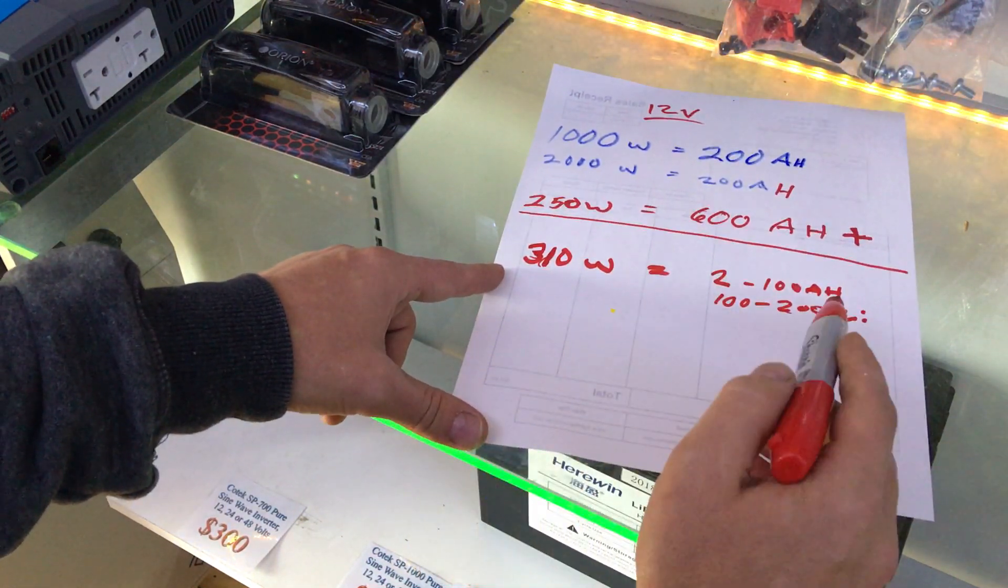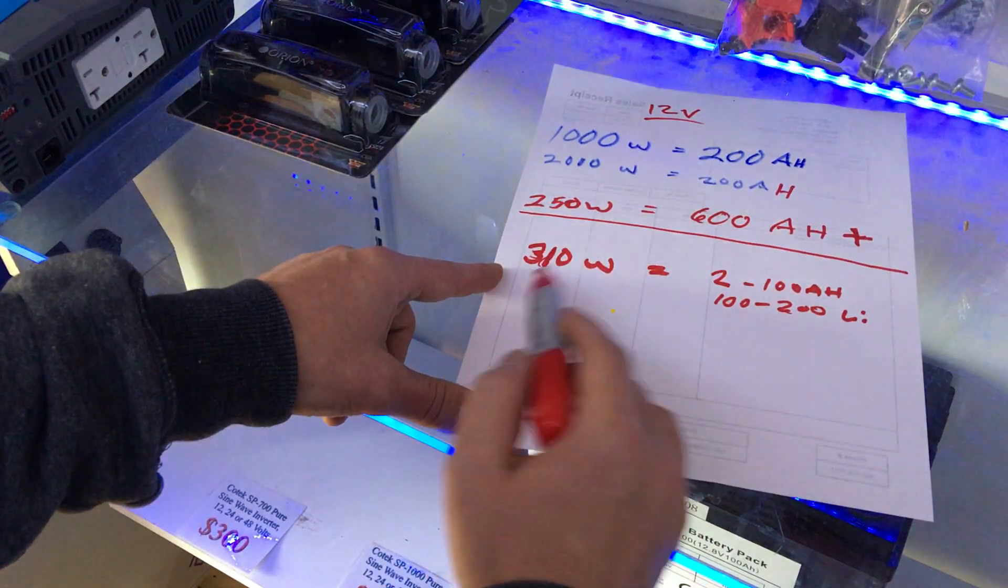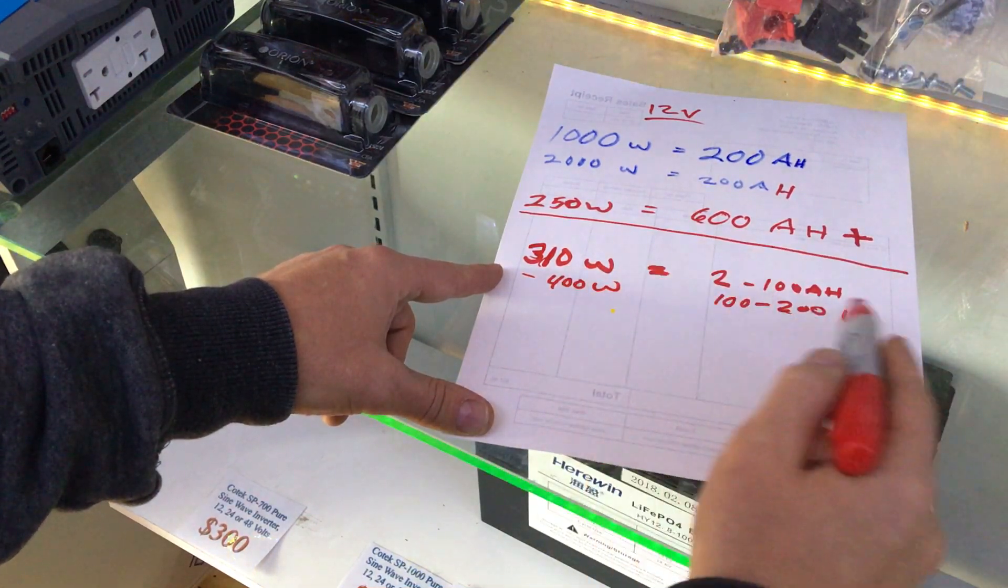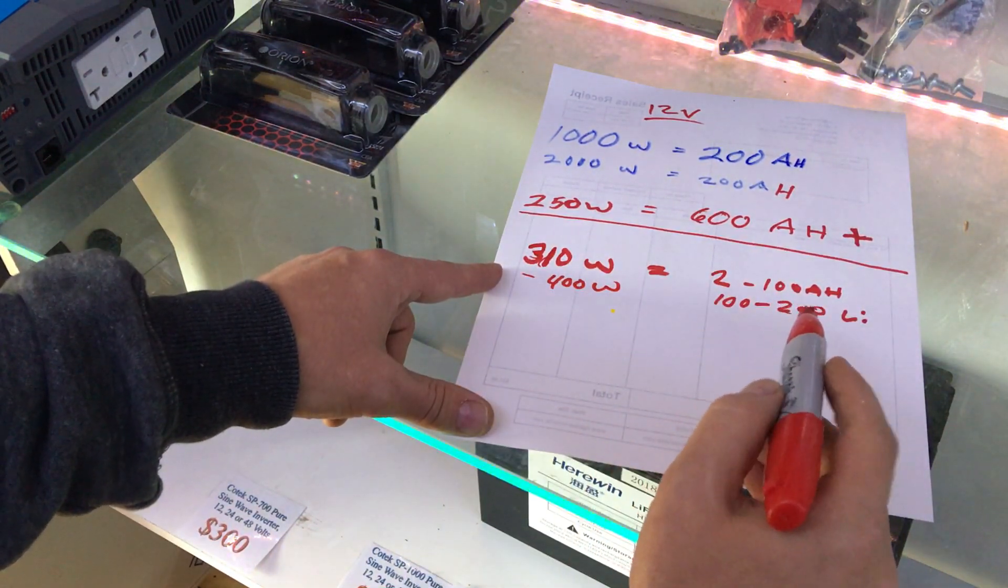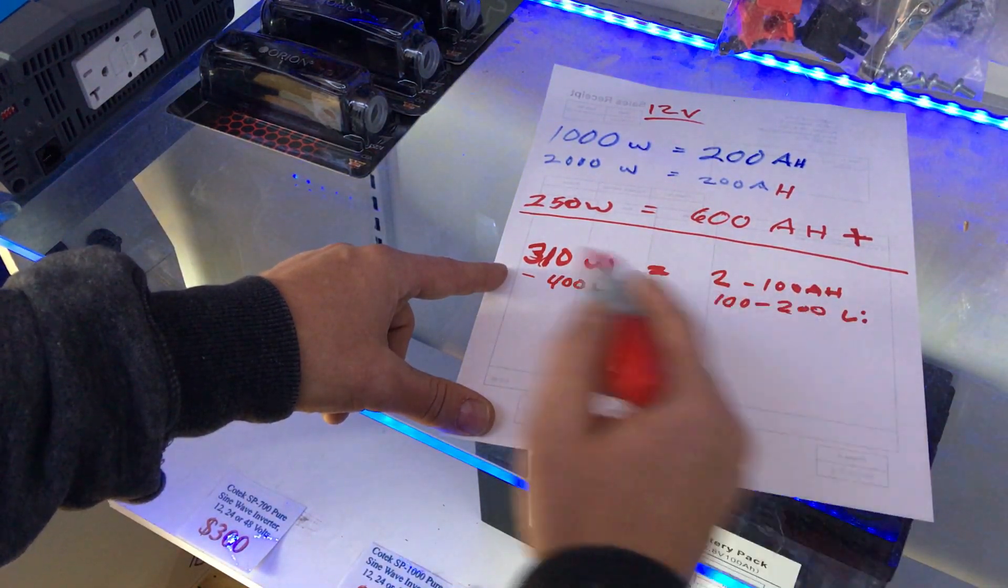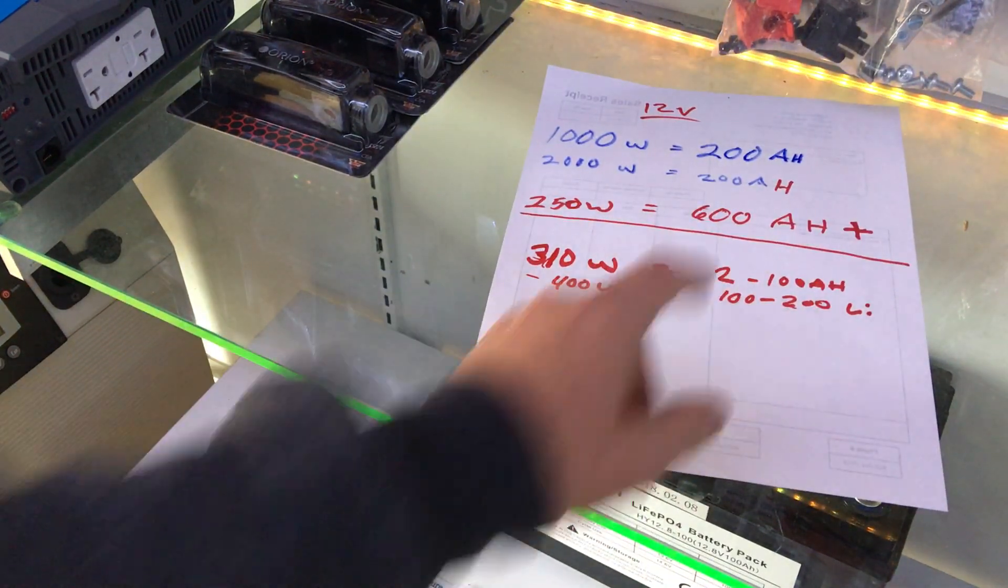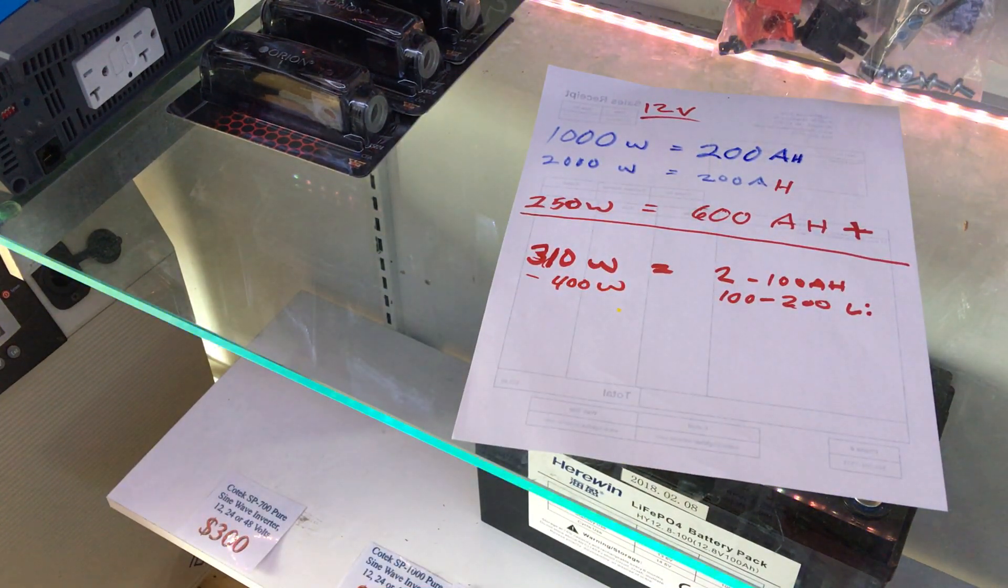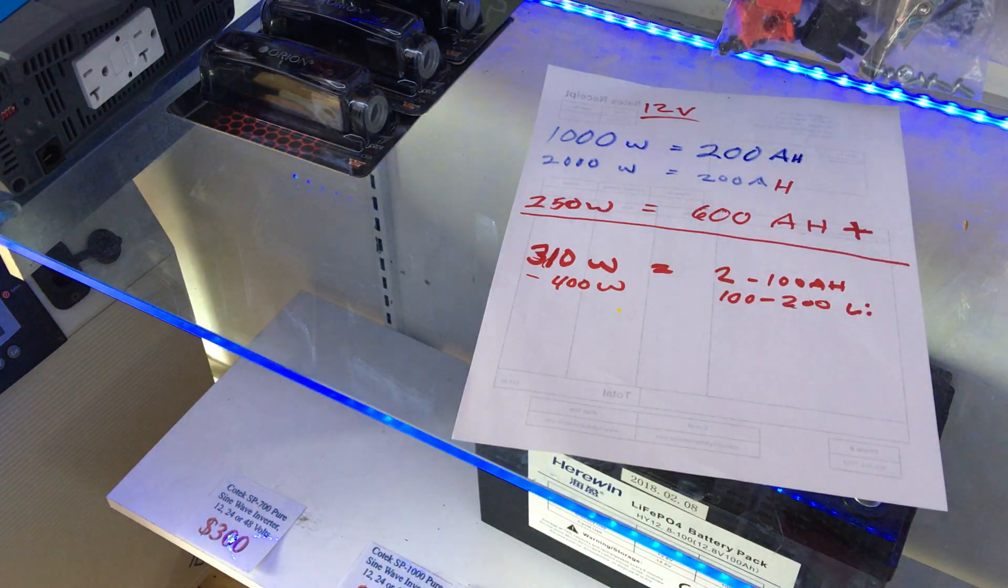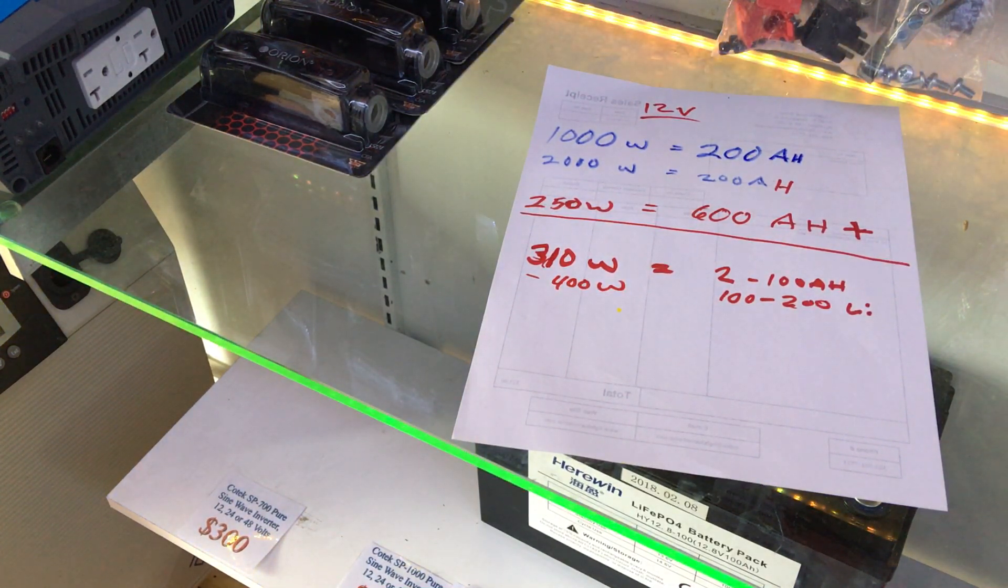But I would say that in general, somewhere around 300 to 400 watts would be plenty appropriate for an RV system. The more the merrier on panels, the more the merrier on batteries. But if you do jump up to the two batteries, you end up with an ability to do an awful lot of stuff—vacuum cleaners, all kinds of big stuff.